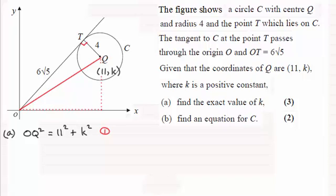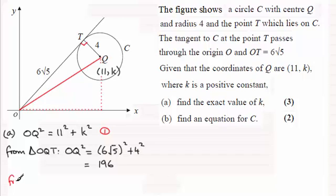Next I'm going to look at the triangle OQT. From triangle OQT we're going to look at using Pythagoras's theorem in this one. And we've got the hypotenuse which is OQ again. So we've got OQ squared is going to equal the sum of the squares of these two sides. So that's going to be 6√5 all squared plus the radius here squared, that's 4 squared. And so working this out you should find you get 196.